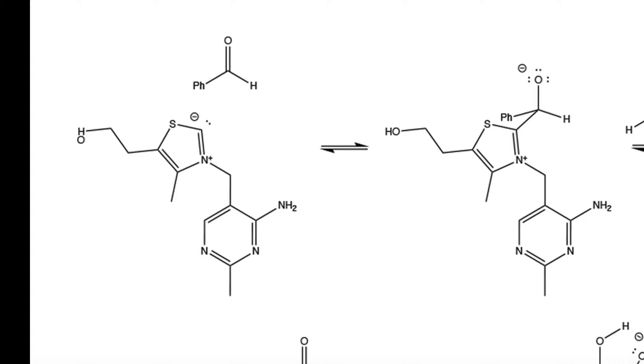The lone pairs on the thiamine attack the carbonyl carbon, break this pi bond, and the pi electrons are placed onto the oxygen. The result creates this alkoxide anion intermediate.